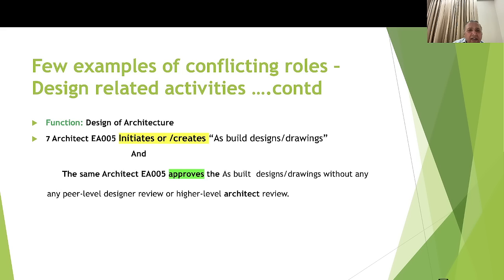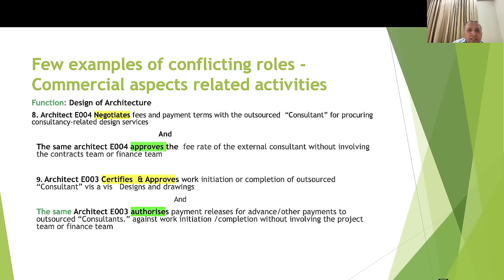Example seven: Architect number five initiates and creates the as-built drawings and approves the as-built drawings without any peer-level review, review with a higher-level architect, or review with the project team. These are the purely design-related examples.